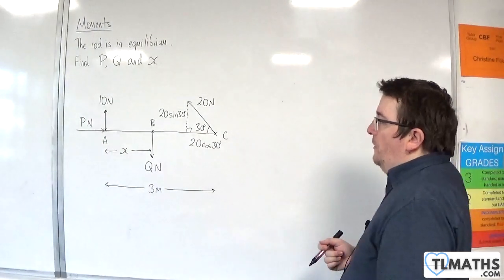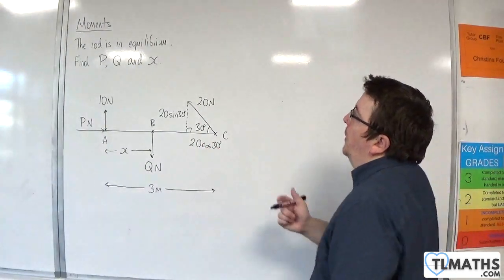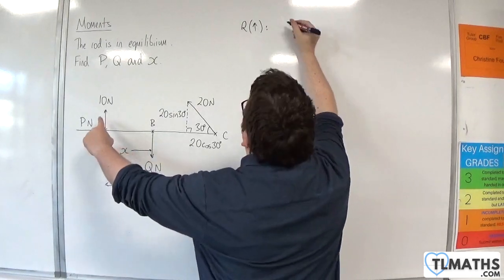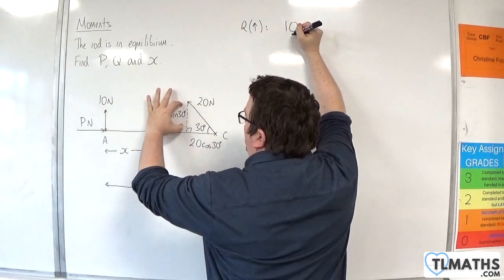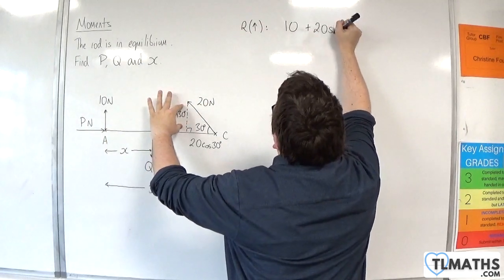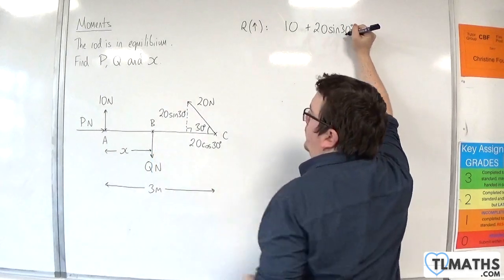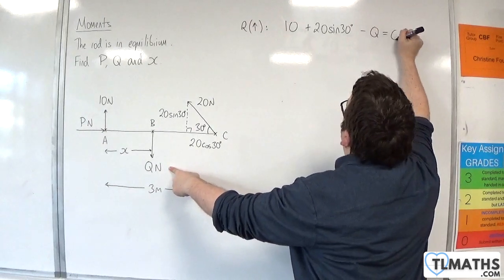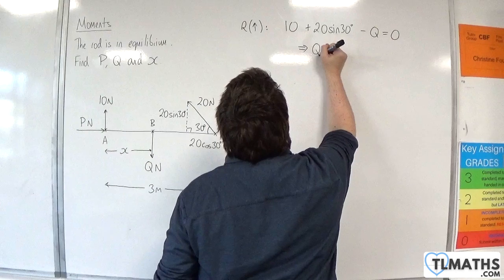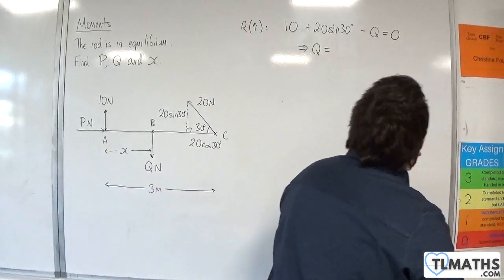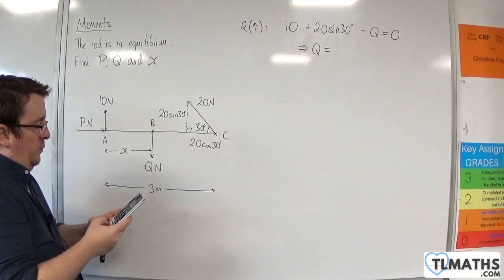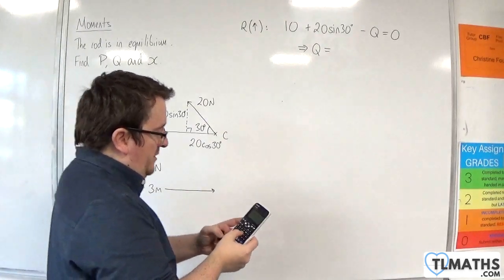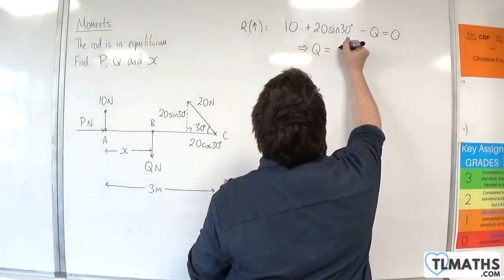One of our missing forces is Q. So I'm going to resolve vertically first, taking upwards as positive. We have the 10 Newton force, we have the 20 sine 30. Now, downwards forces is just Q. So take away Q must be equal to 0. 10 plus 20 times sine of 30 - make sure your calculator is in degrees - and that's 20. So Q is 20.